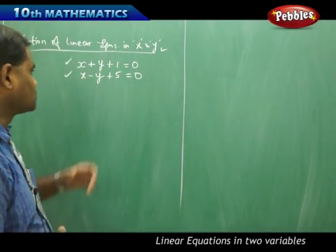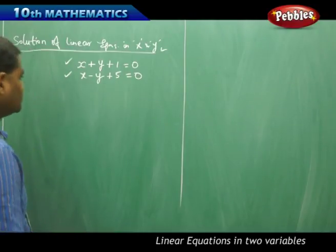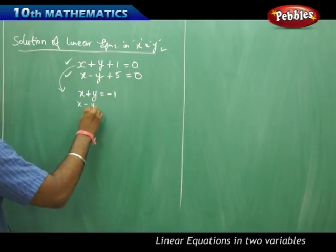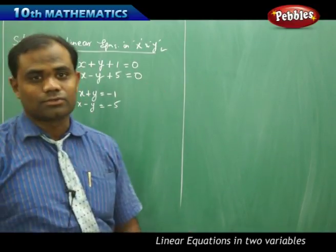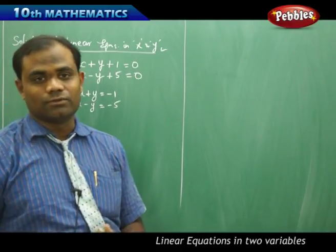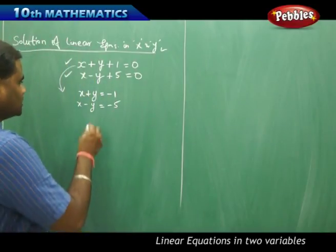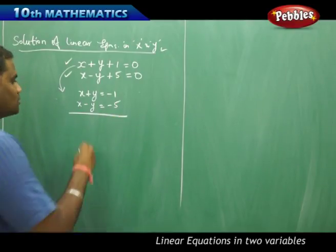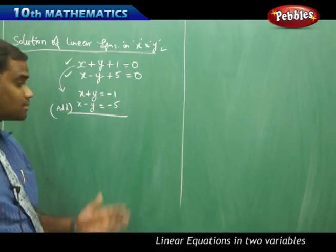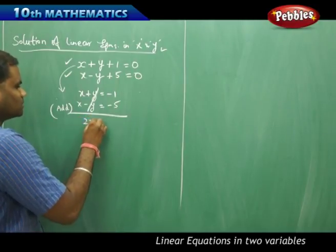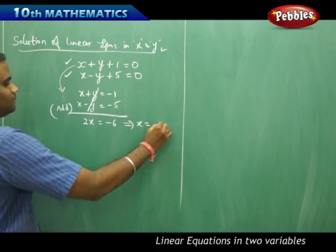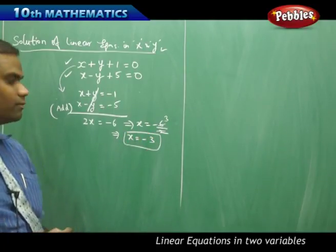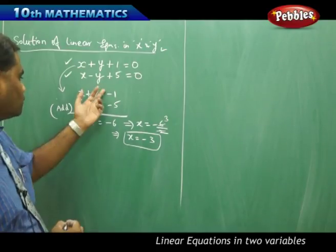Now I take these two linear equations and want to find the solution. Taking each separately: x plus y equals minus 1, and x minus y equals minus 5, by moving constants to the right and x and y terms to the left. I will solve using the simultaneous method — adding the two equations so that the y terms cancel, giving 2x equals minus 6, which implies x equals minus 3.